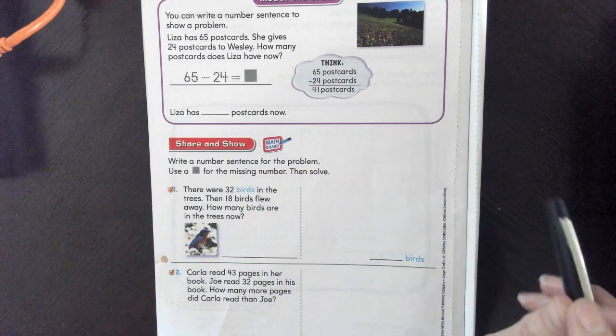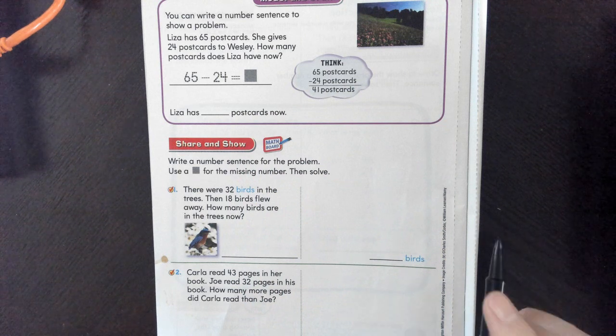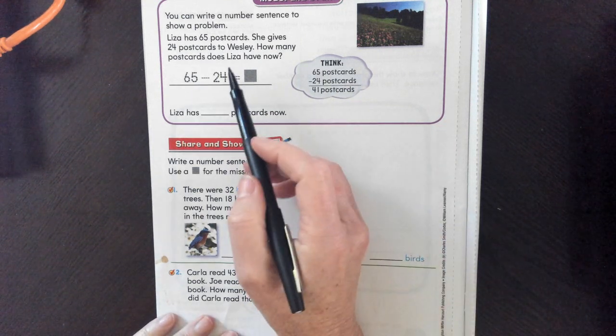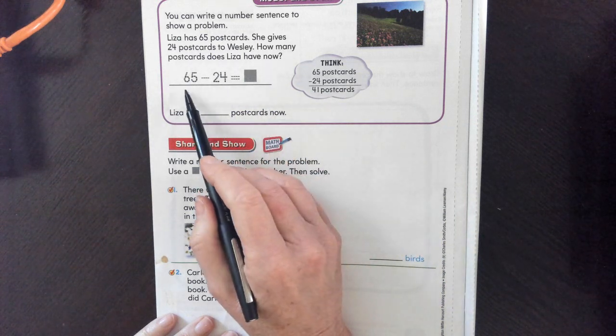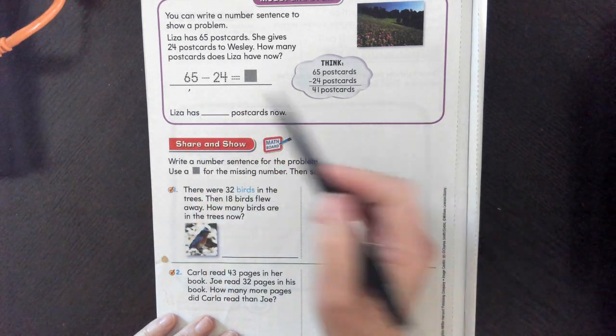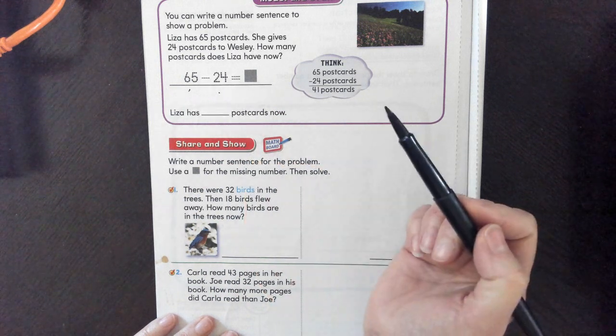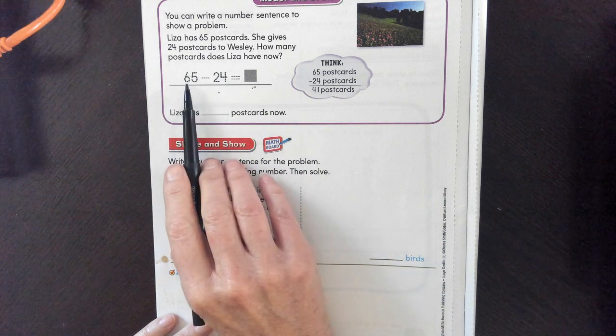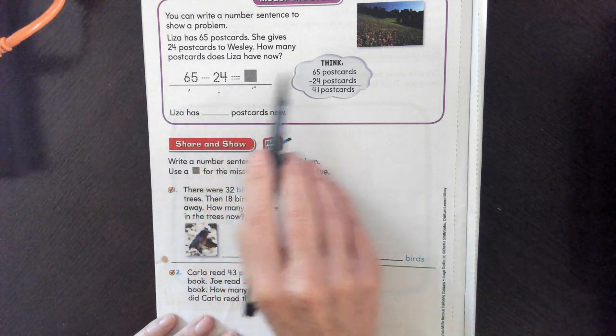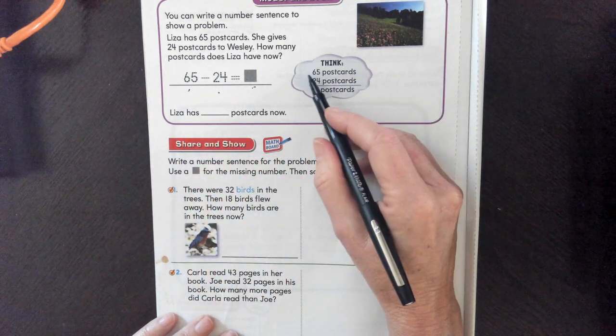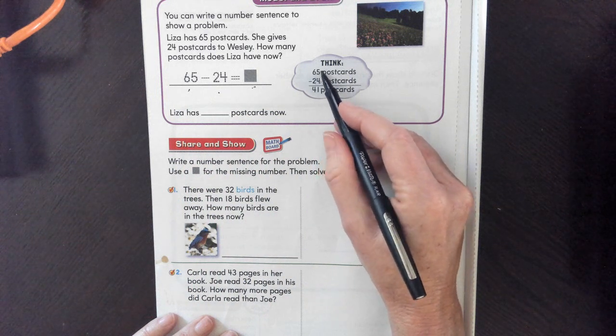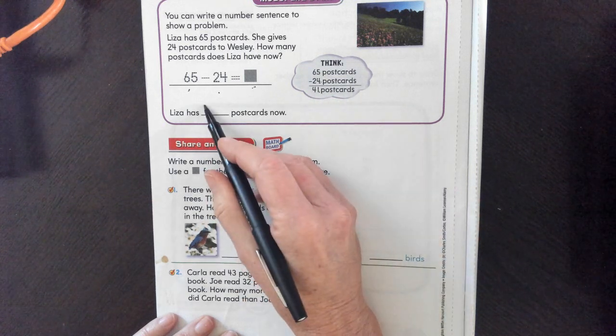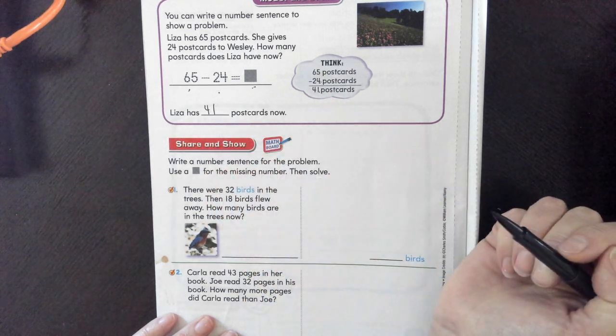Liza has 65 postcards. She gives 24 postcards to Wesley. How many postcards does she have now? So, what's the question? How many postcards does she have now? She started with 65. She gave 24 away. So we're trying to find out how many she has left. Whenever you subtract going this way, it's really difficult. Always line it up going down. And when you did it this way, it looked like there was no regrouping because you can do 5 minus 4 is 1, 6 minus 2 is 4. So she has 41 postcards now.